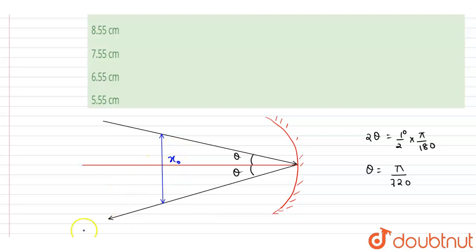So if you see, we know that this distance will be f, which is r by 2, the radius of curvature by 2. This is the focal length.